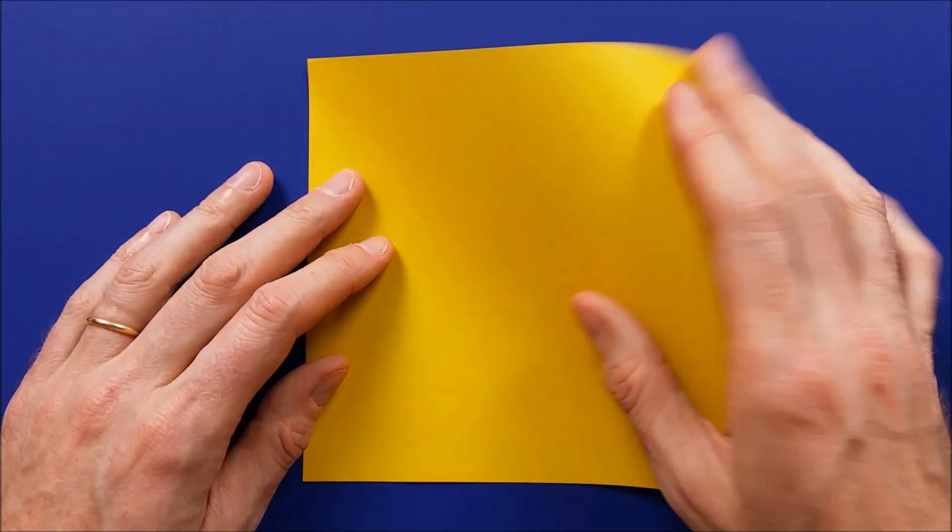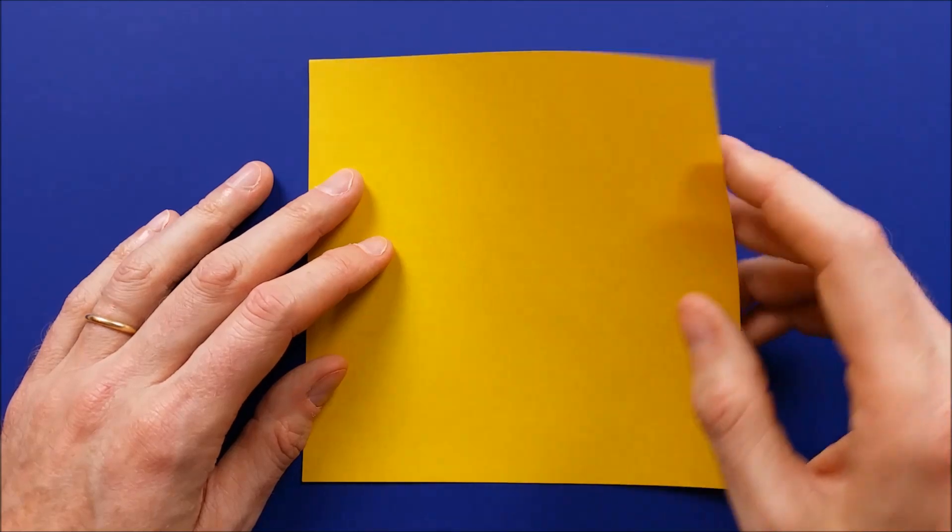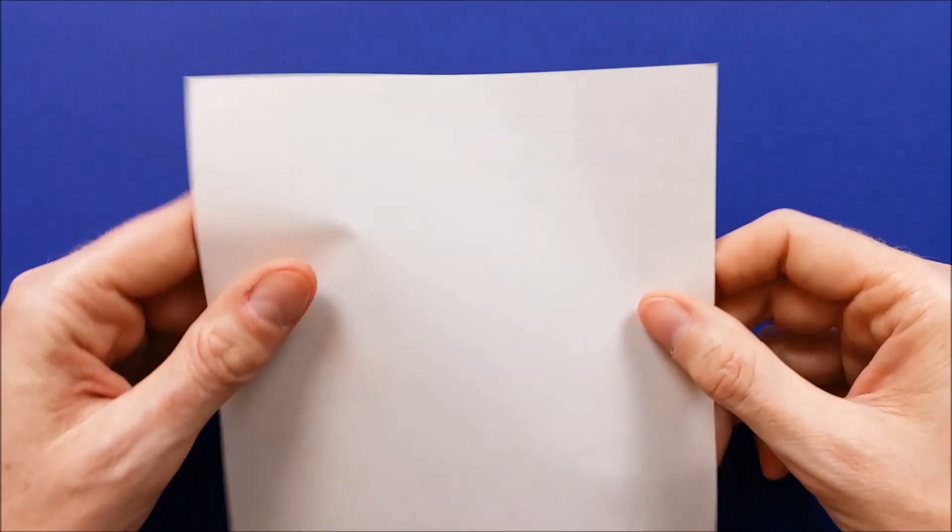To fold an origami badminton shuttlecock, you need a square piece of paper with a different color on each side. And we'll start with the white side on top.